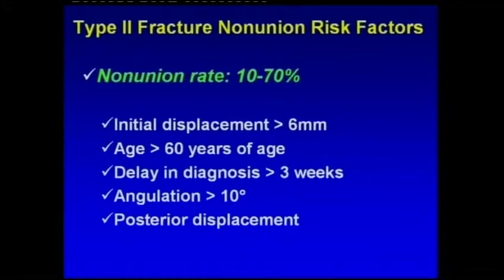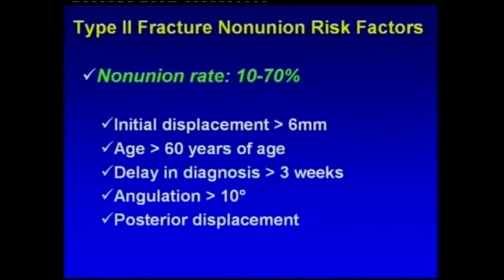Type 2 fractures have a high non-union rate of 10 to 70%. Risk factors for non-union are initial displacement more than 6 mm, age older than 60 years, delay in diagnosis more than 3 weeks, angulation more than 10 degrees, and posterior displacement.